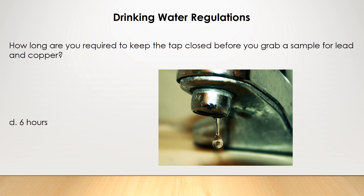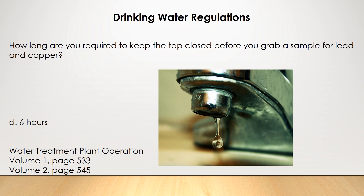Under the lead and copper rule, you're required to let the water sit in the plumbing for at least six hours before you grab a sample. If you want to learn more, go to the textbook Water Treatment Plant Operation Volume 1, page 533. For more on drinking water regulations, go to Volume 2 starting on page 545, where there's an entire chapter dedicated to all the drinking water regulations you'll need to know.